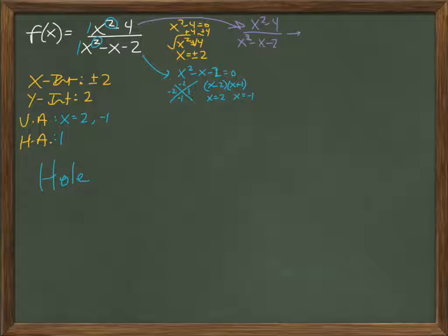So, we already know that the bottom is going to be x minus 2, x plus 1. The top, hopefully you can look at that and say, oh, that's the difference of two squares. Wouldn't that become x plus 2, x minus 2?